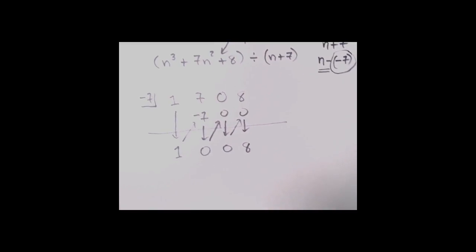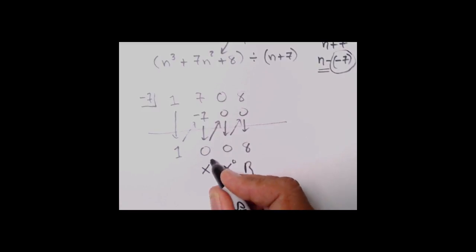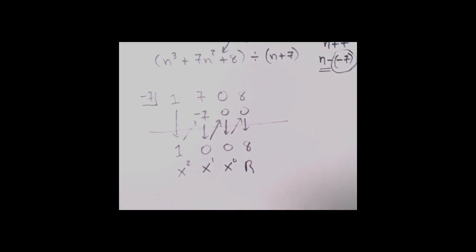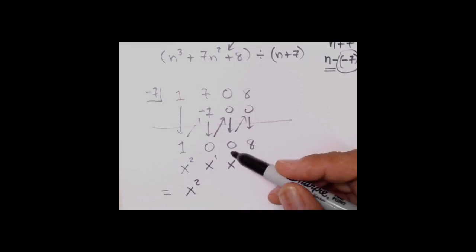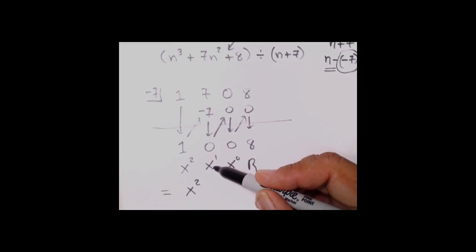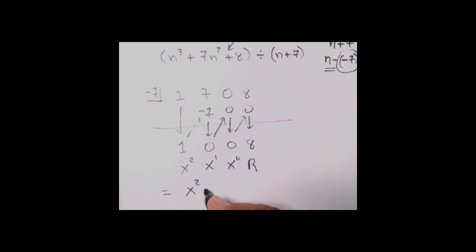Here's how these guys go: start from the right — the first guy is the remainder, we are going to have a remainder. Then x to the zero, x to the first, x squared. So the final answer: 1x squared, which is x squared, there's no x to the first and no plain numbers. So what we have is x squared with remainder plus 8.